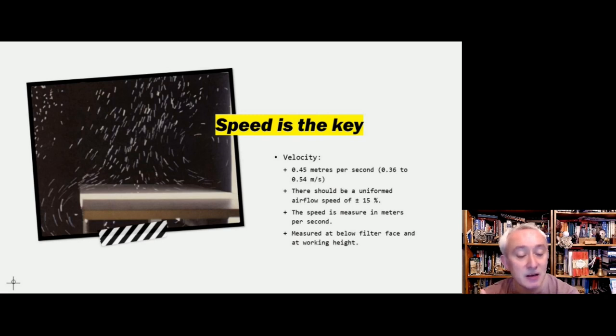And we measure the speed in meters per second, and we assess that below the filter face, around six inches, and then at the working height. And working height is defined as a space just above vials.